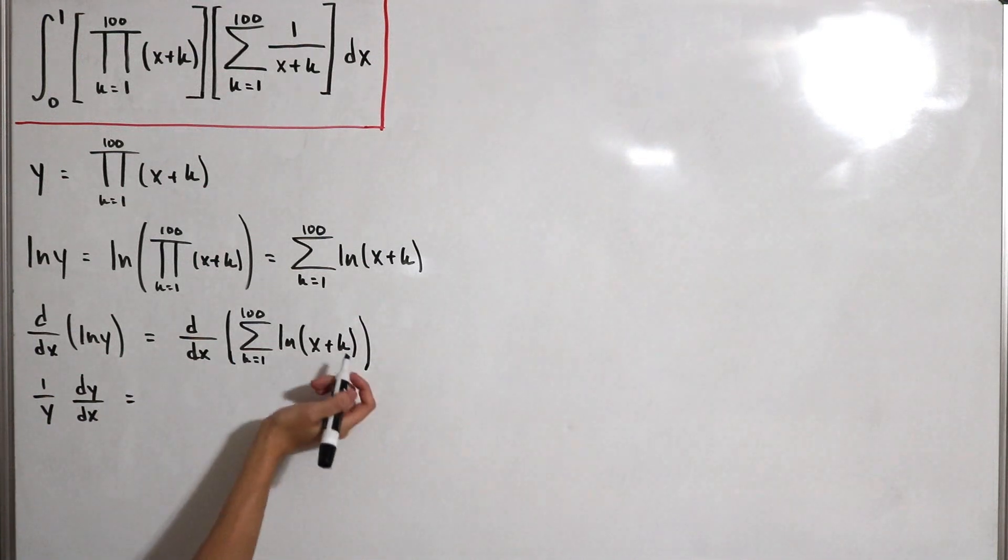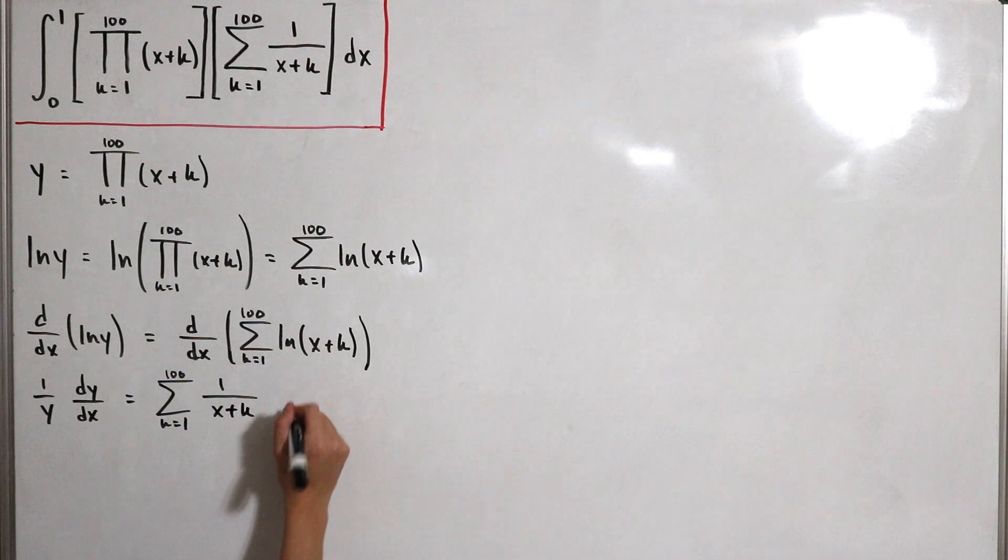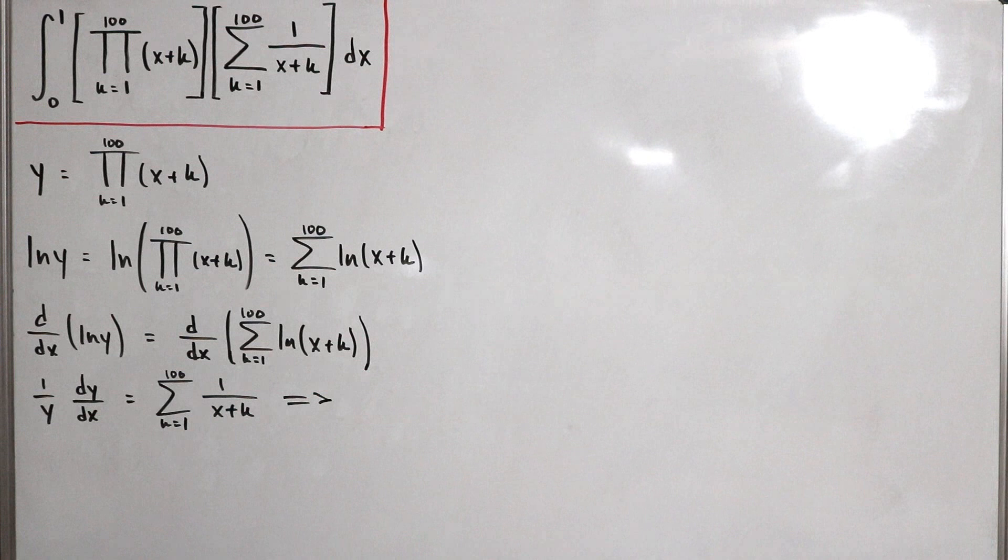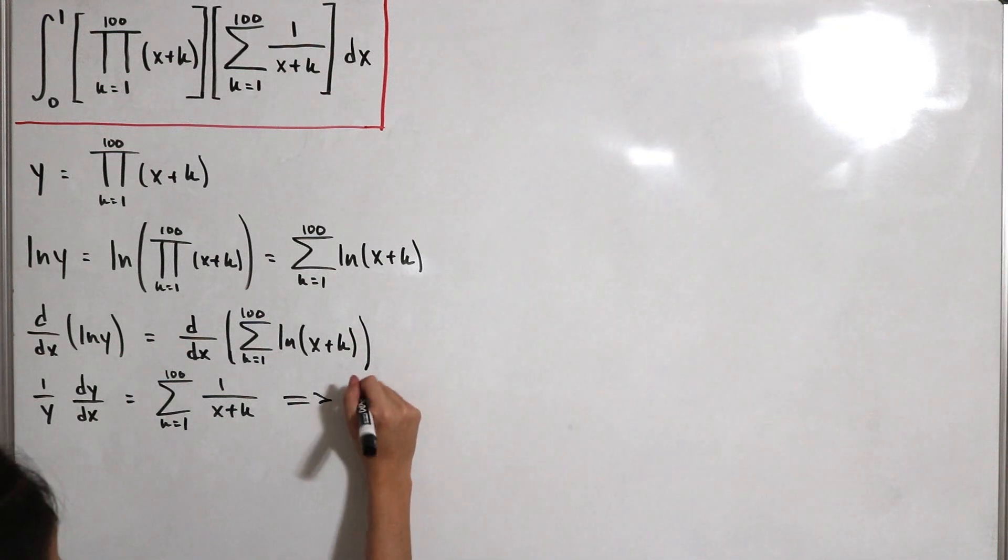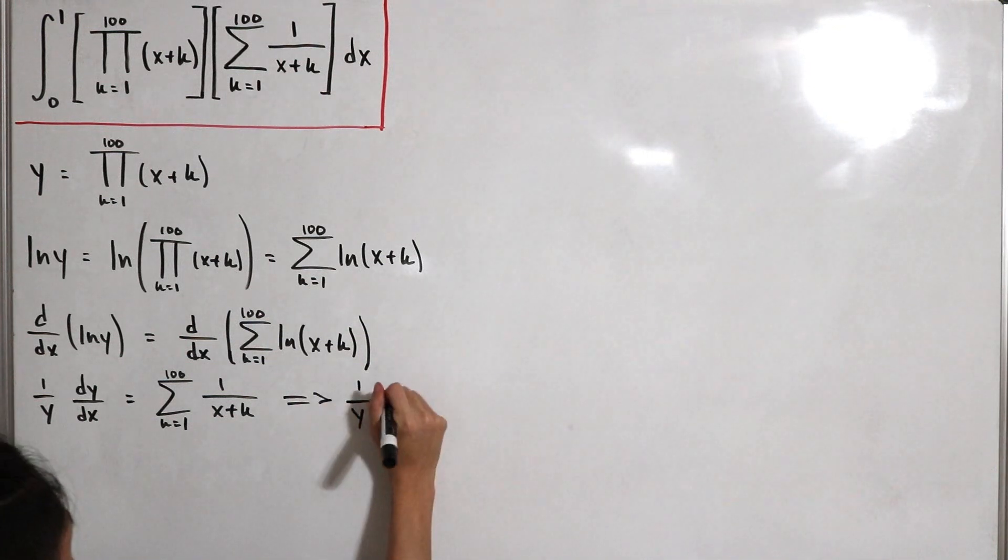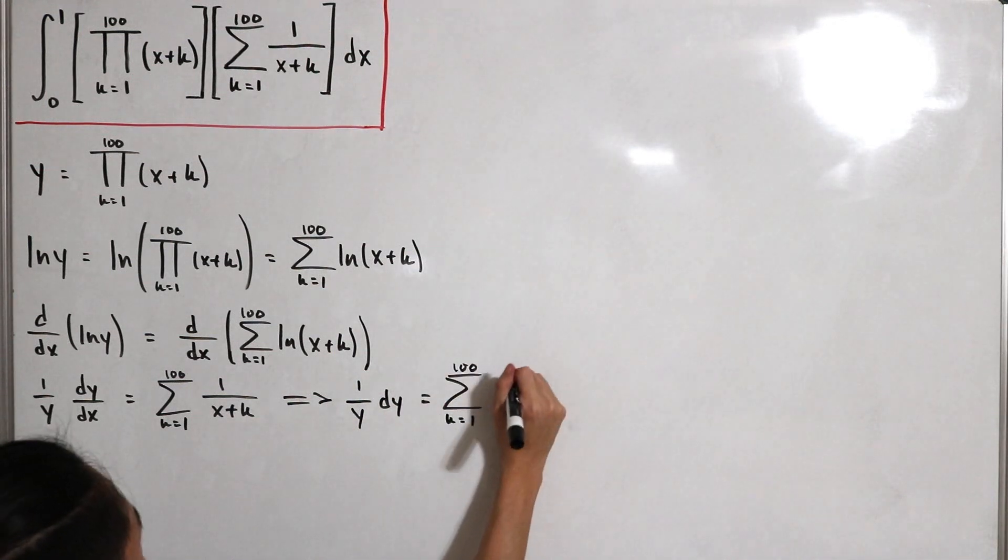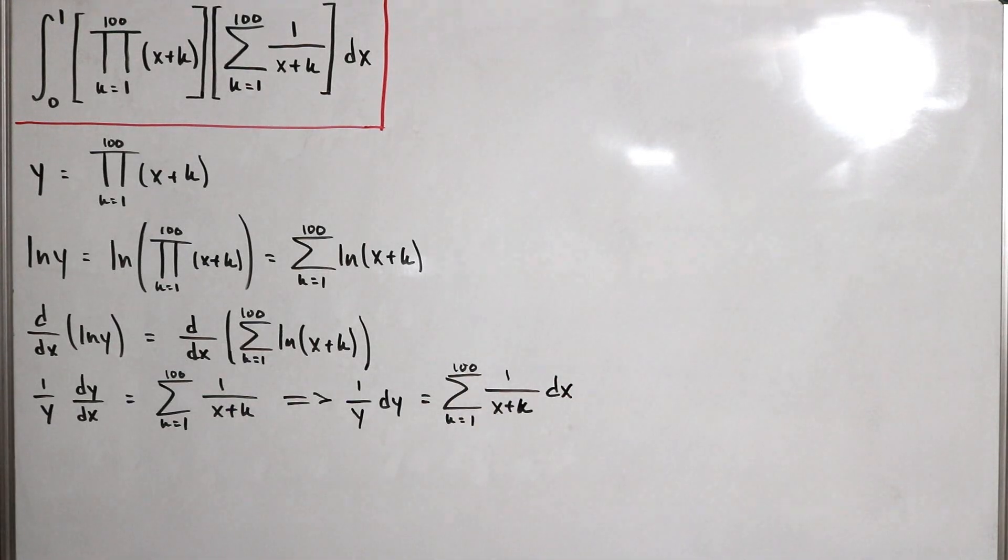We do a little simplification. I'll multiply the dx differential to both sides, similar to what we learned from calculus about linearization. Doing so, we have 1 over y dy equals the sum from k equals 1 to 100 of 1 divided by x plus k, then dx.